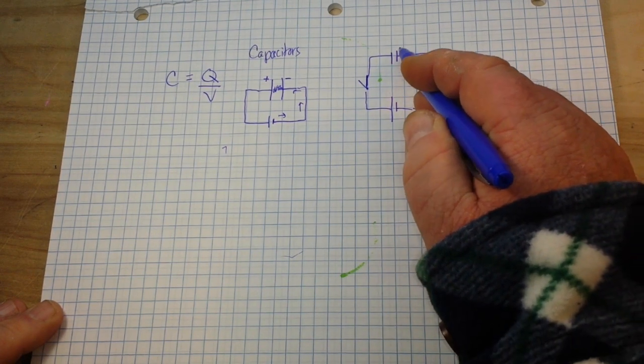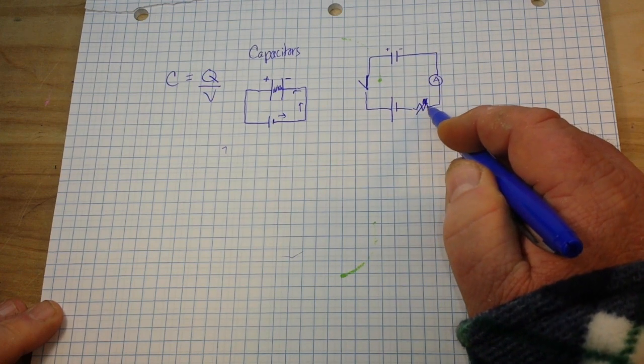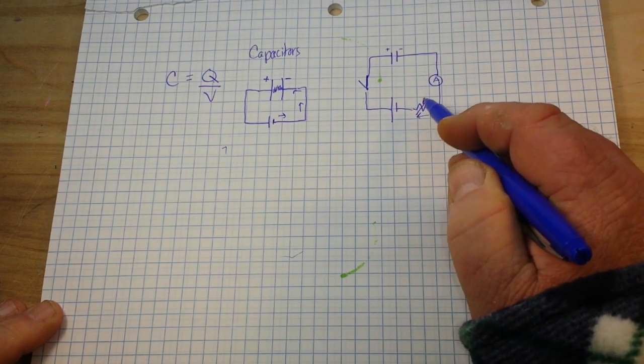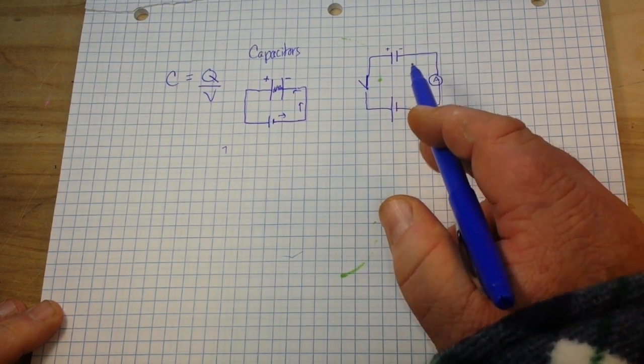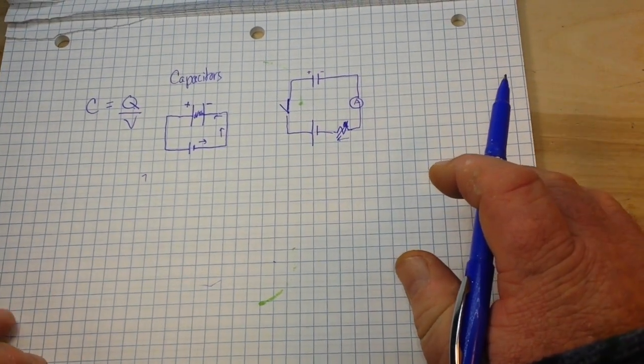And as our capacitor charges, we will decrease the resistance, always keeping the current level. Well, what happens in that case?